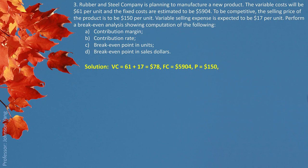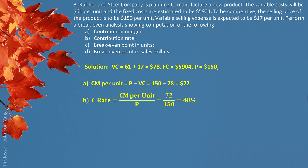Making a list of the information: variable cost is $61 per unit, and variable selling expense is $17 per unit — putting them together gives variable cost per unit of $78. Fixed cost is $5,904, and the price is $150. So contribution margin per unit, which is price minus variable cost per unit, gives us $72. Contribution rate is contribution margin per unit divided by price, giving us 48%.